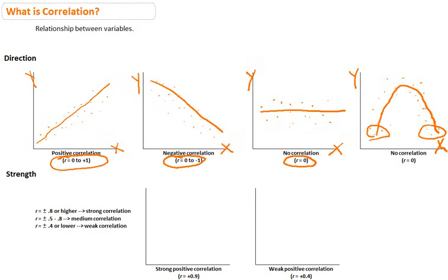We can see here that an r equal to plus or minus 0.8 or higher is typically referred to as a strong correlation. An r equal to plus or minus 0.5 to 0.8 is considered a medium correlation, while r equal to plus or minus 0.4 or lower is usually referred to as a weak correlation. Now, we can have this for any of the types of correlations, positive or negative, that we were talking about before.